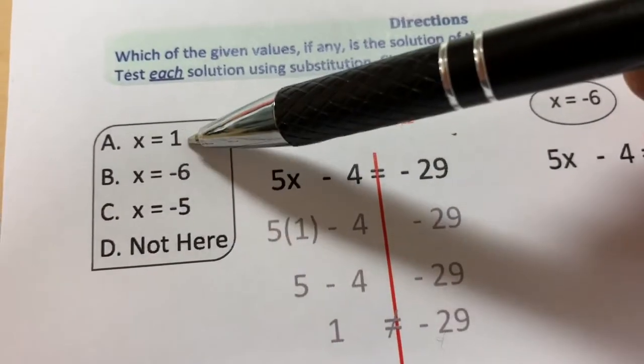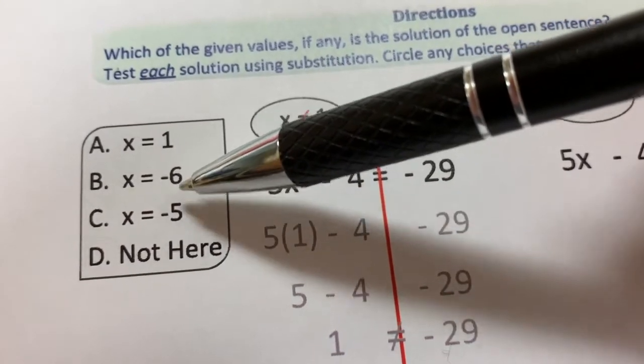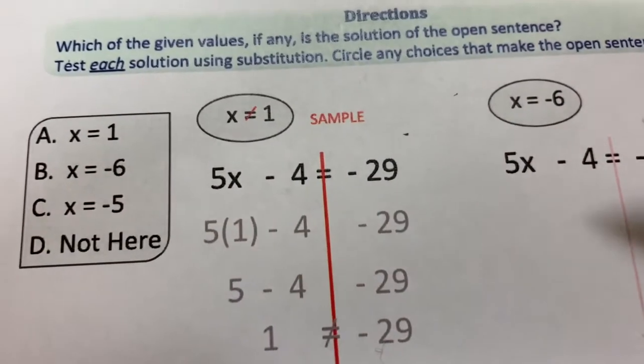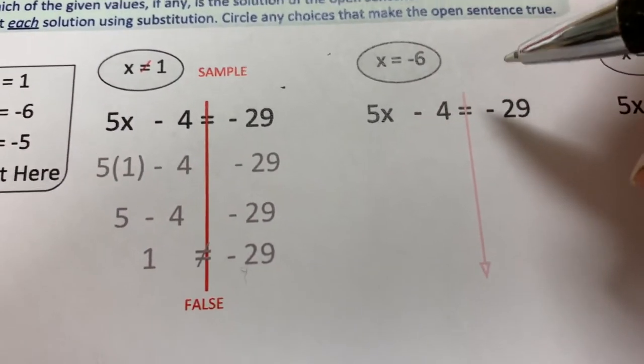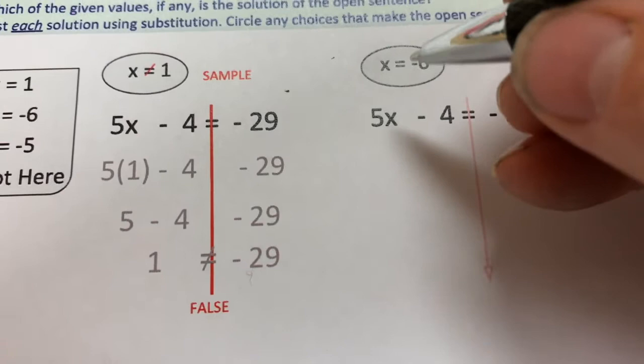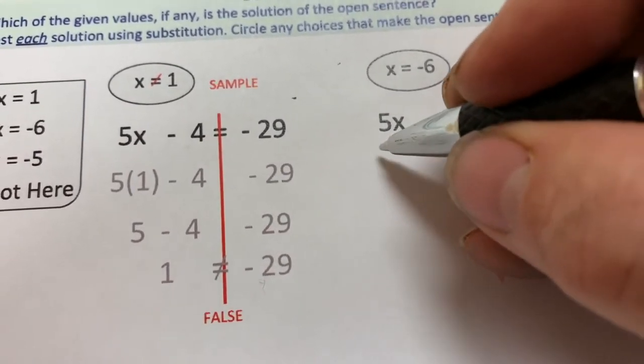We have a couple of possible solutions. We have X equals 1, X equals negative 6, X equals negative 5, or maybe it's not here. Let's start with X equals negative 6. So, we're going to plug in negative 6 for this X.